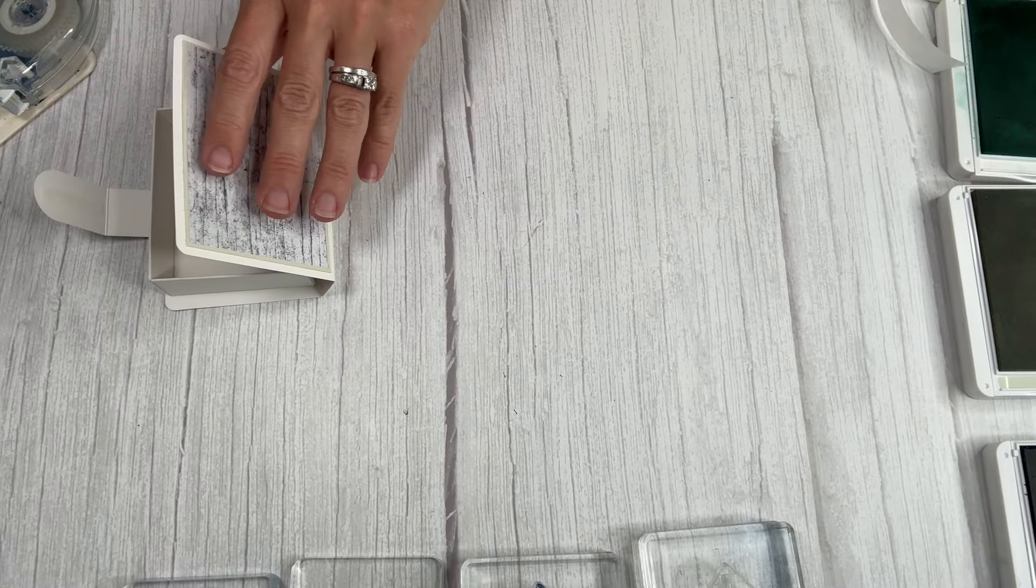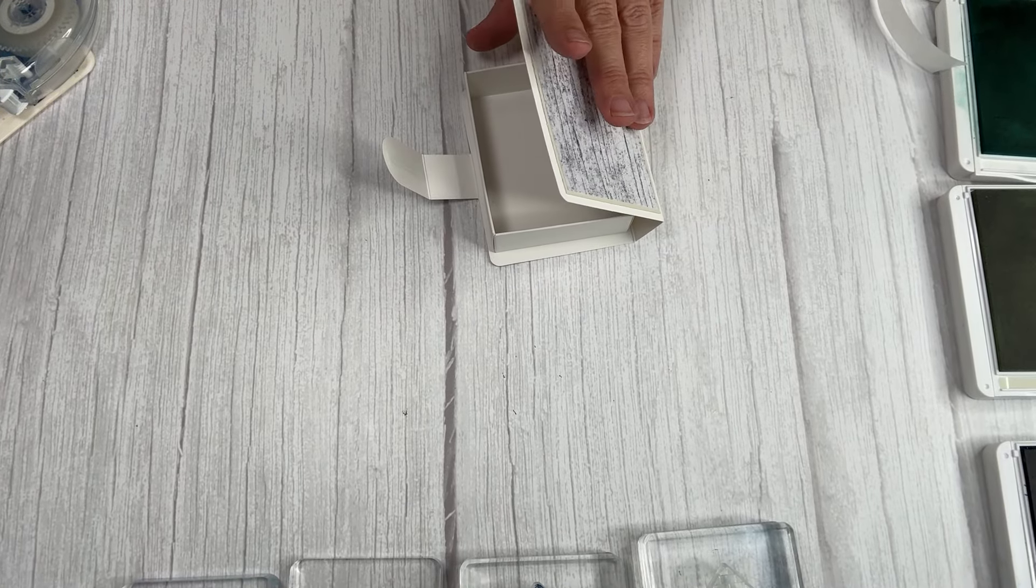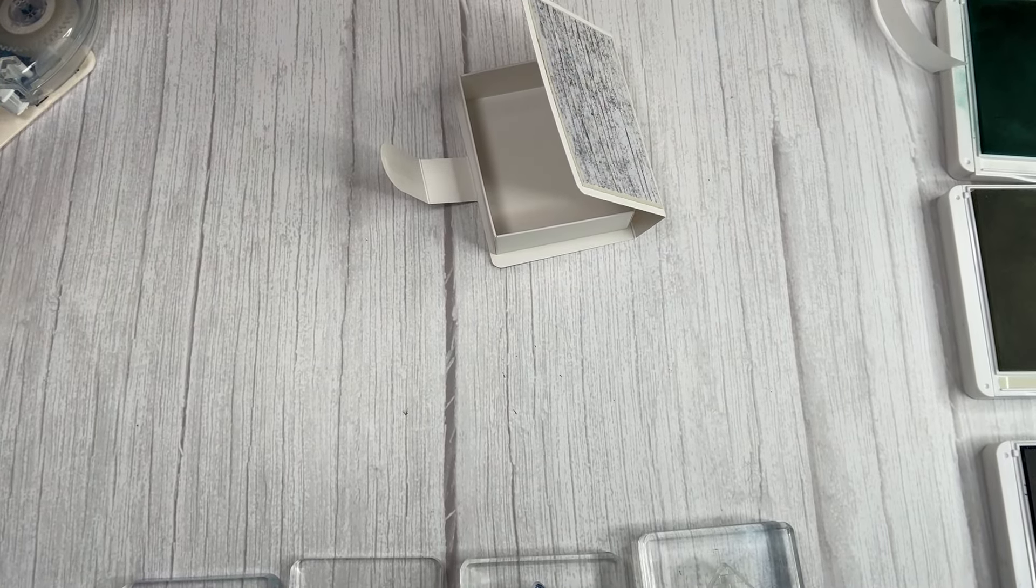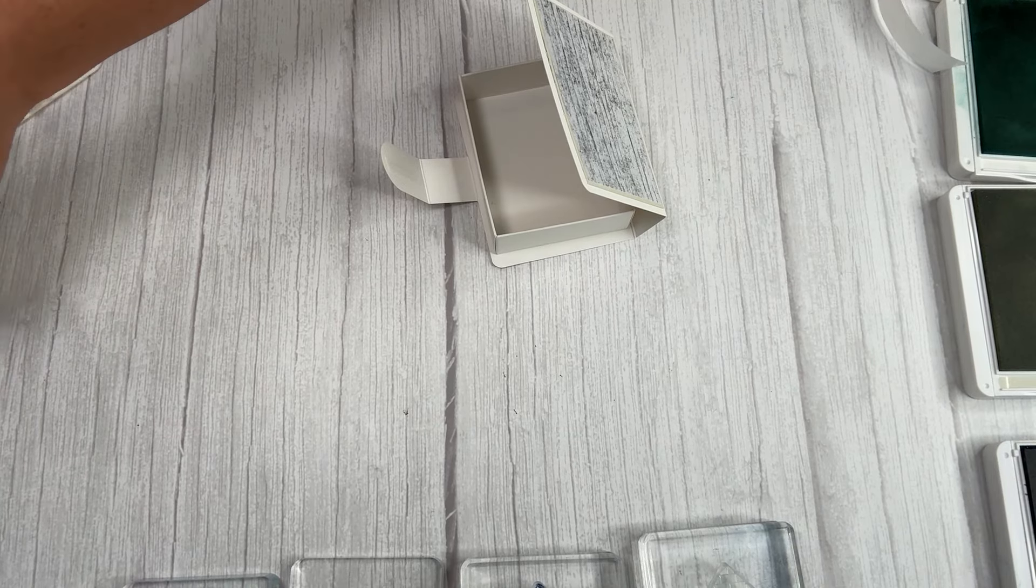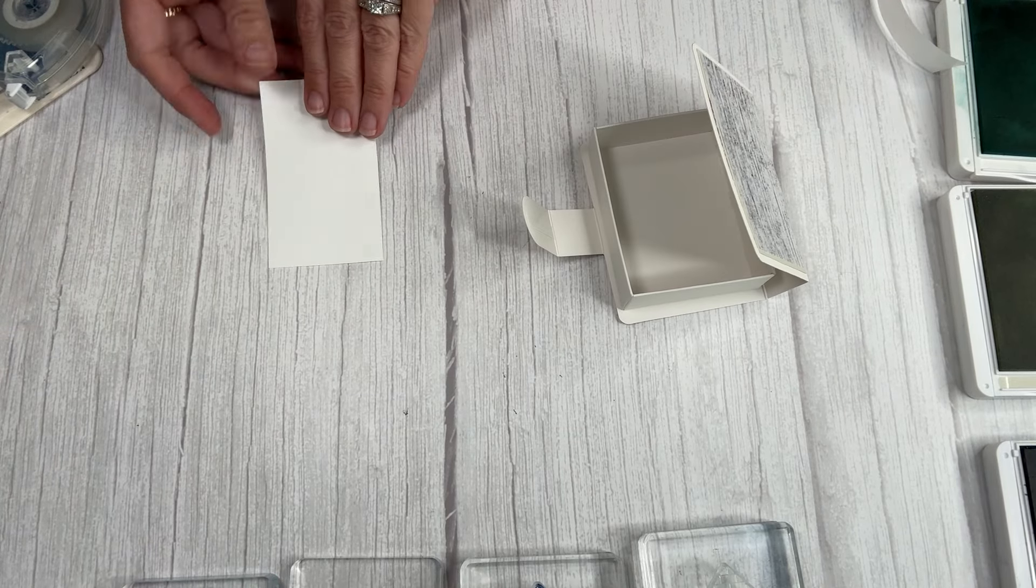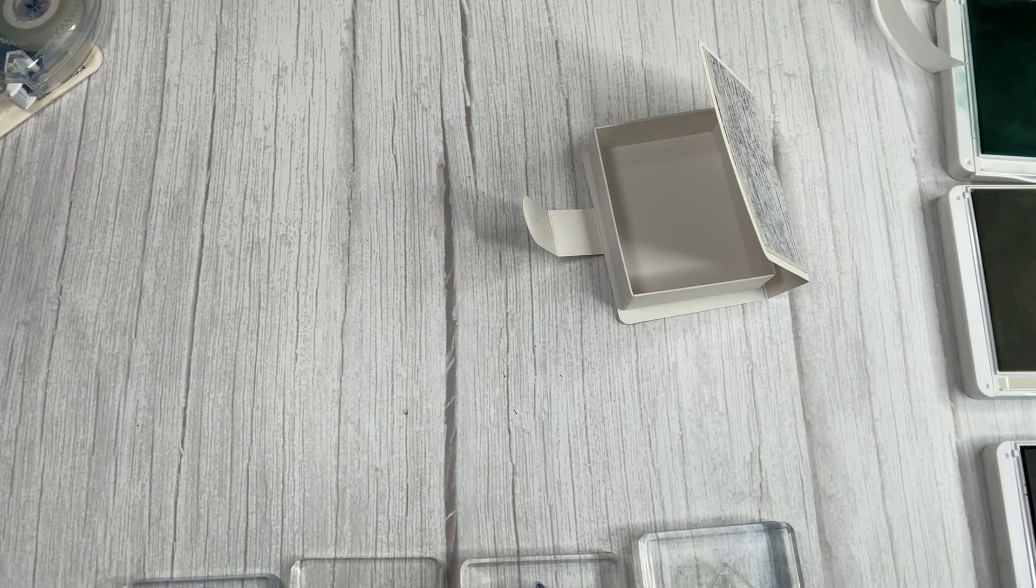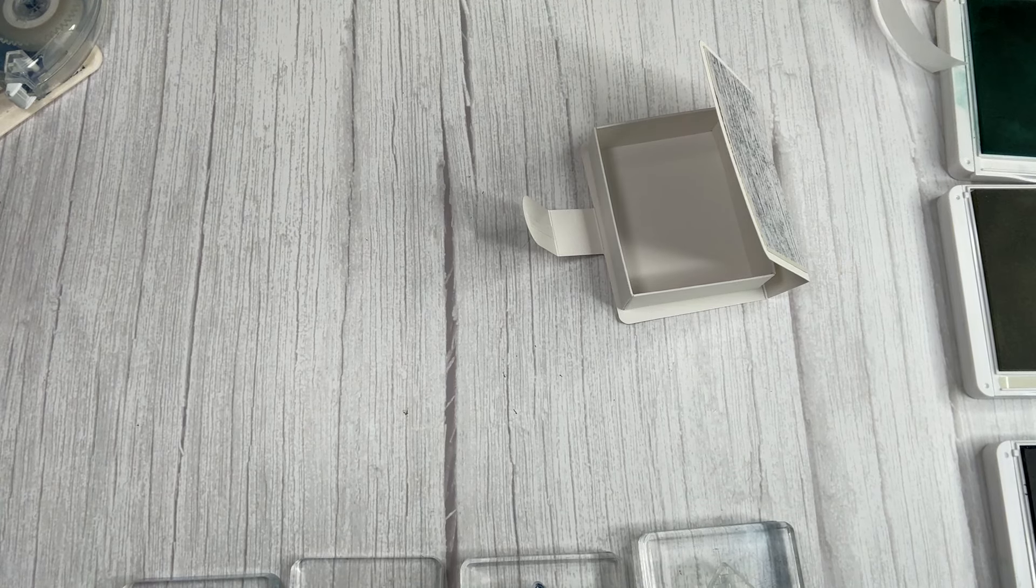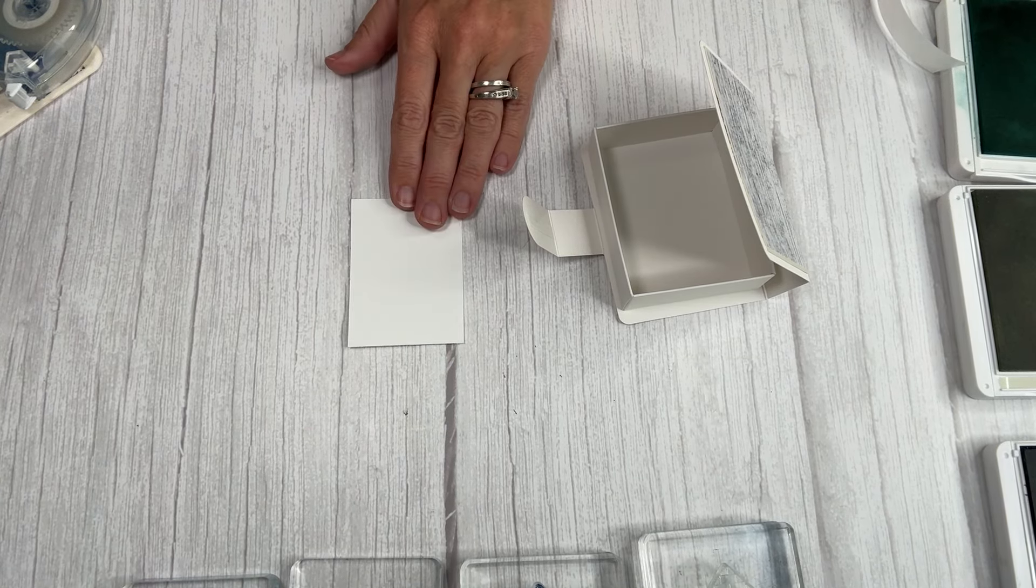On the inside here, I have a piece of white that is cut two and a half by three and a half. And I just got to trim off this one side really quick. Oh, I had to do that before we started. And I didn't. I'm sorry. It's two and a quarter by three and a quarter. And we're going to stamp that.